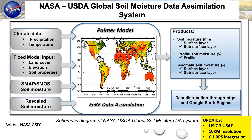The value of ground-based measurements is the high accuracy that you have. However, they suffer from sparse and limited coverage. The key is to combine these with satellite-based observations through a land surface model via data assimilation. What we are showing here is the NASA USDA Global Soil Moisture Data Assimilation System. By doing this you're able to constrain a two-layer soil moisture model, producing a value-added product that provides global coverage and leverages both in-situ observations and satellite-based observations.